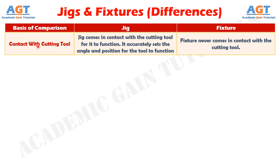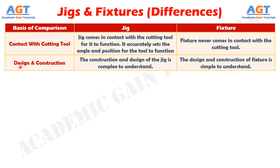If we differentiate them based on their contact with the cutting tool, jigs come in contact with the cutting tool and accurately set the angle and position for the tool to function, whereas fixtures never come in contact with the cutting tool. Based on design and construction, the construction and design of the jig is complex to understand, whereas the design and construction of a fixture is simple to understand.